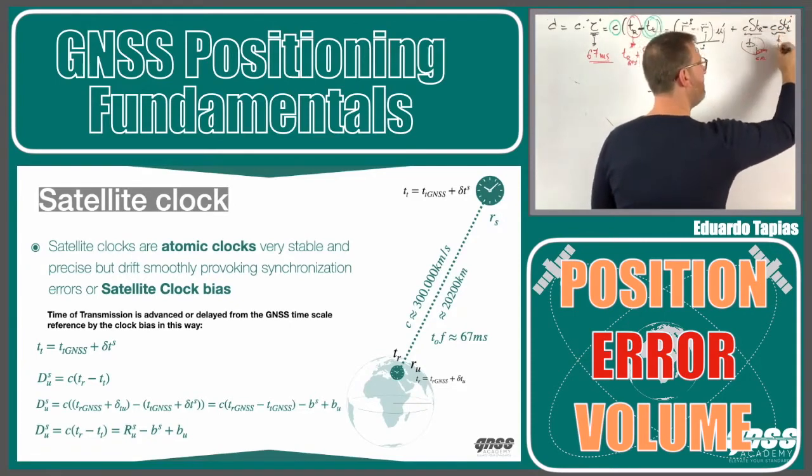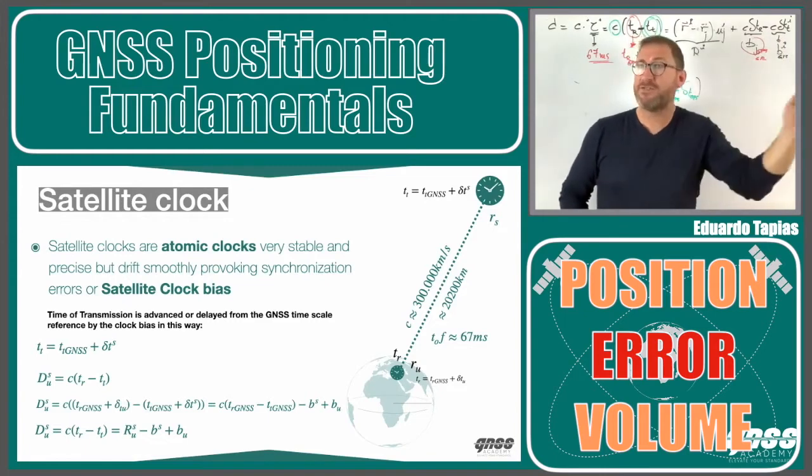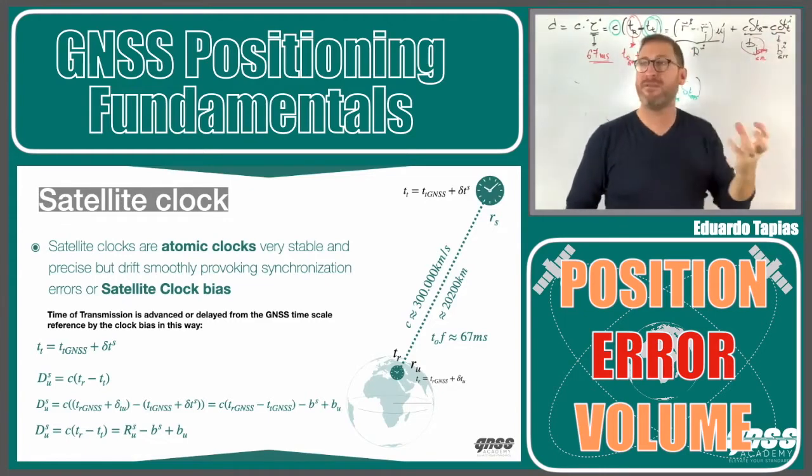And this is what we call bias of the satellite with regards to the GPS time scale, for example. This is something that is different per line of sight, because this is coming from a satellite property. It's not a receiver property.